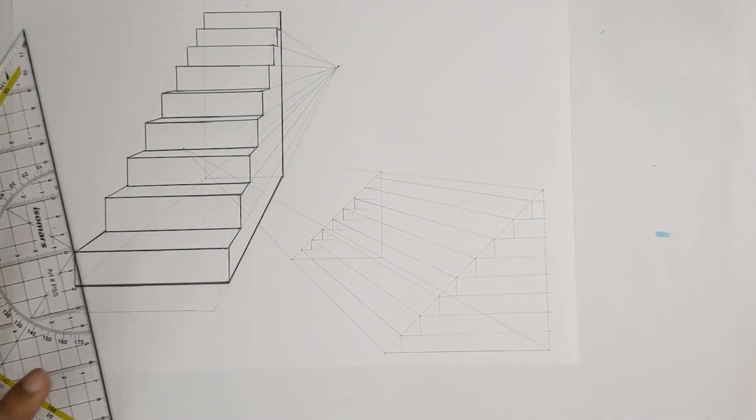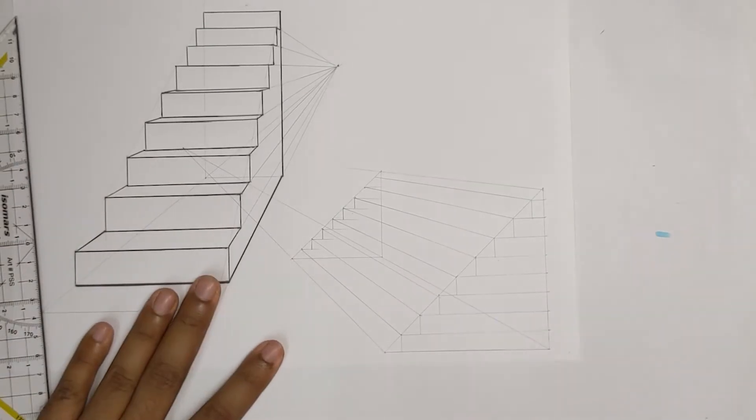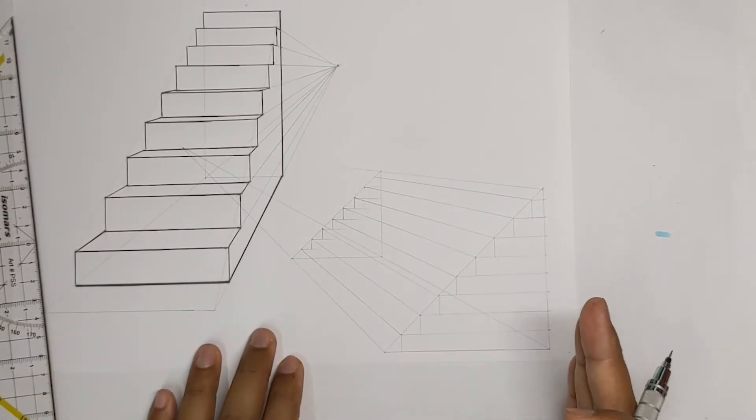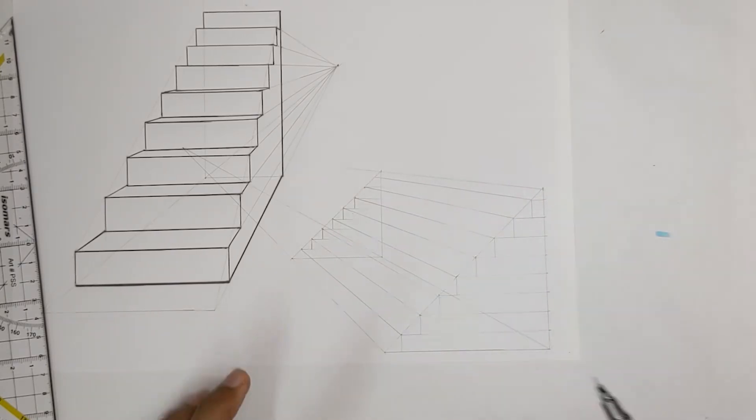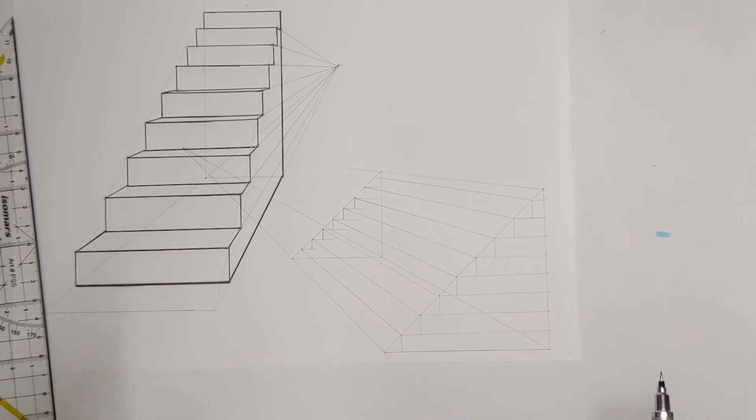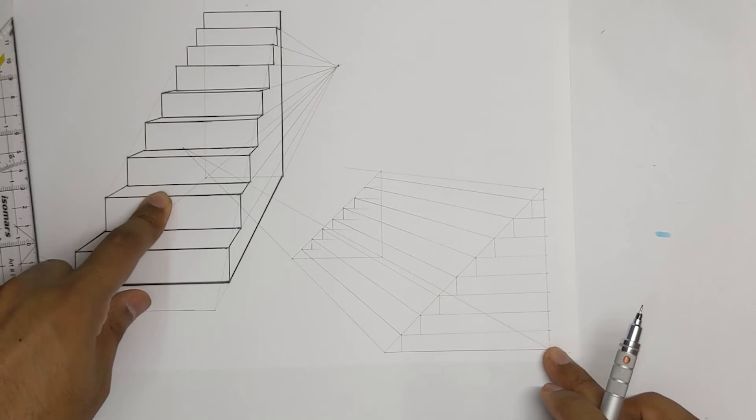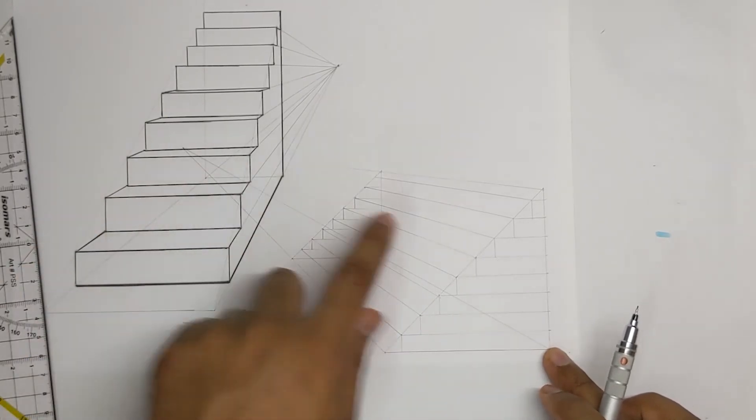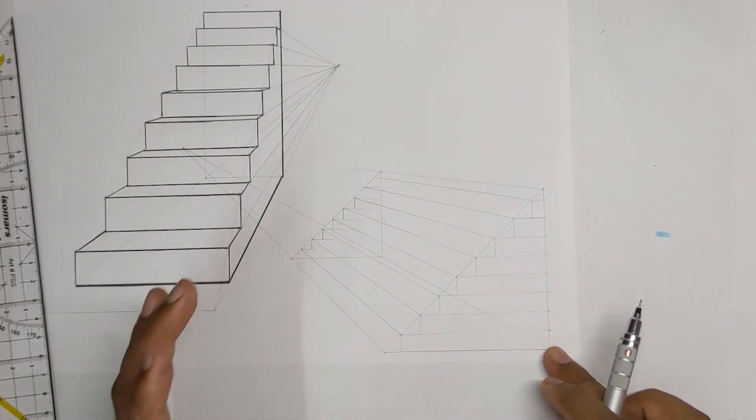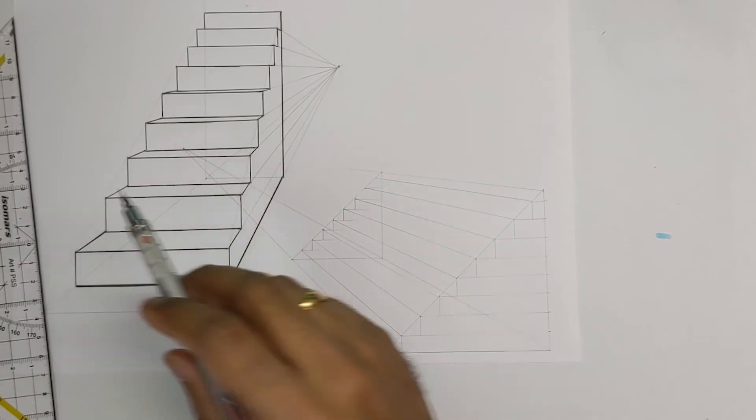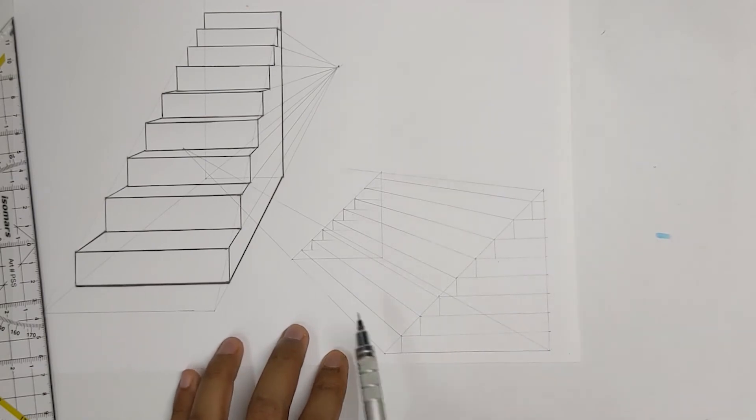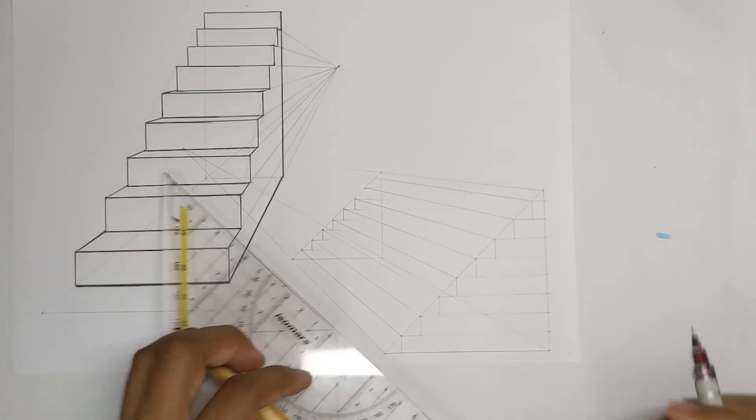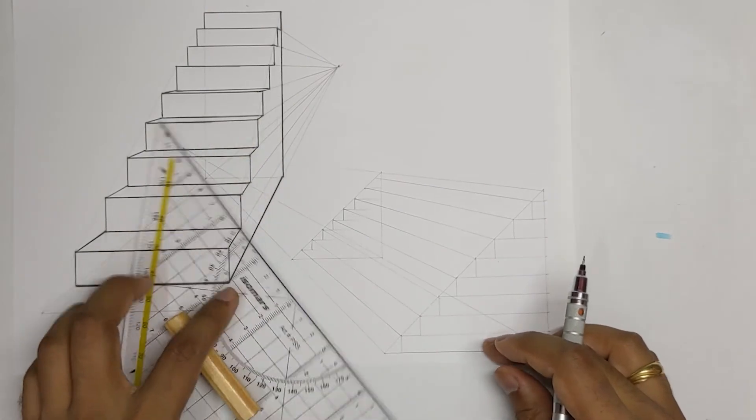So one thing that you need to remember in drawing one point perspective is all your horizontal lines will remain horizontal all your vertical lines will remain vertical. The only kind of convergence that you get are the lines which are going away from you. So all these lines are going away from us. So these lines should go to the single vanishing point.